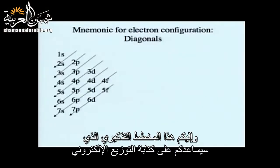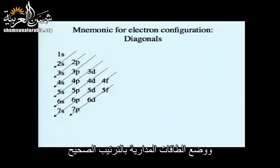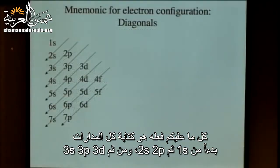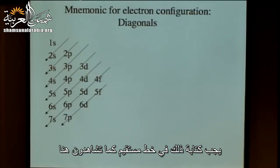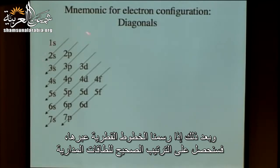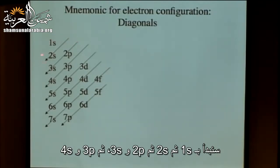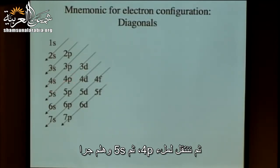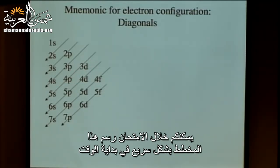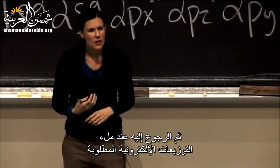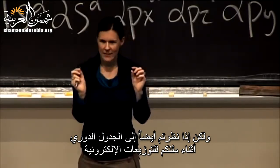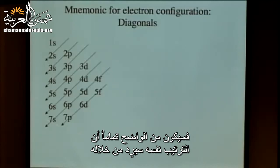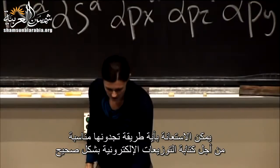Here's a mnemonic for orbital filling order: write all orbitals in a line — 1s, 2s, 2p, 3s, 3p, 3d, 4s, 4p, 4d, 4f — then draw diagonals through them. Following the diagonals gives the correct energy order: 1s, 2s, 2p, 3s, 3p, 4s, 3d, 4p, 5s, and so on. This confirms that 4s is lower in energy than 3d, which you can also read directly from the periodic table.